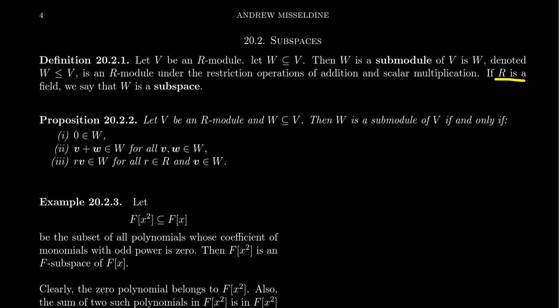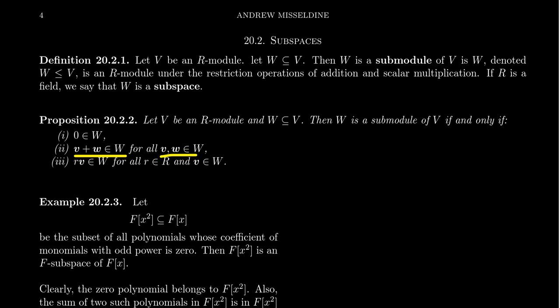In the special case that R is a field, V is a vector space and we call W a subspace. Given any module V and subset W, W is a submodule if and only if three conditions hold: W contains the zero vector, W is closed under addition — meaning for any vectors v and w in W, v plus w is also in W — and W is closed under scalar multiplication.